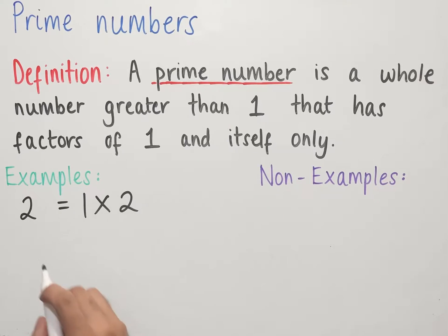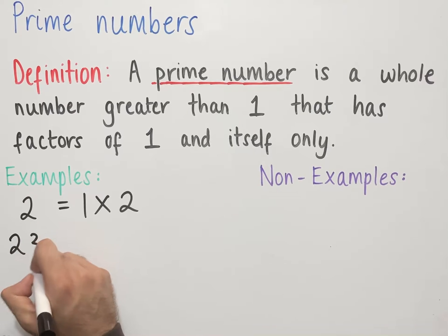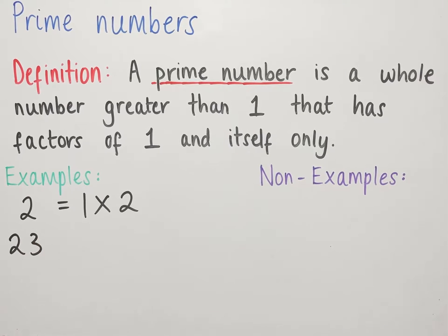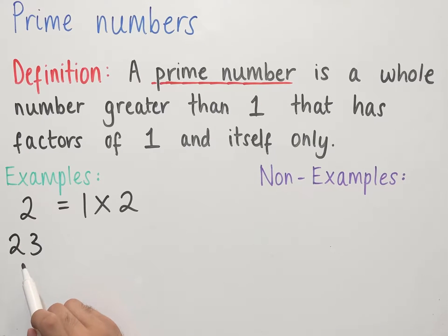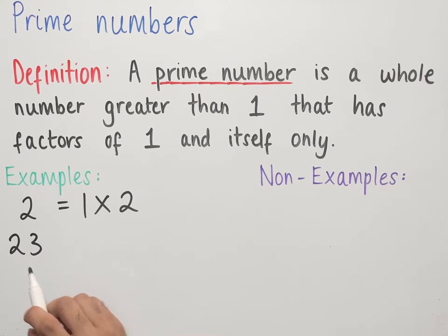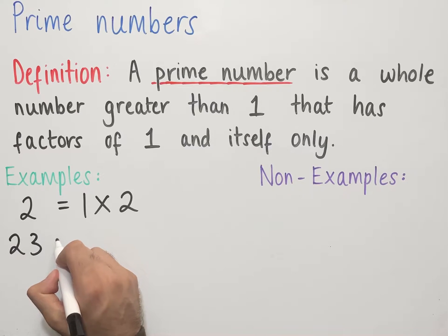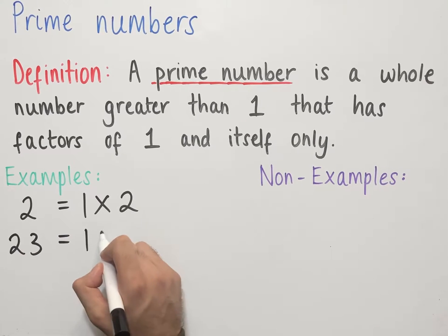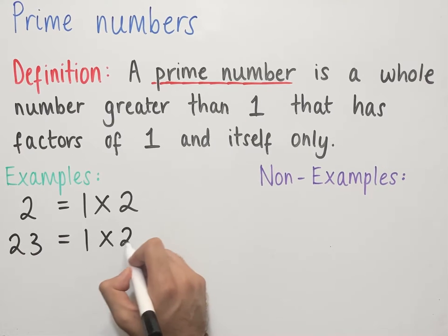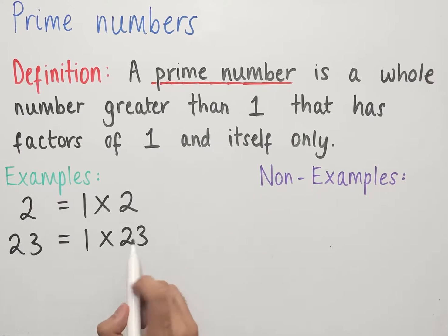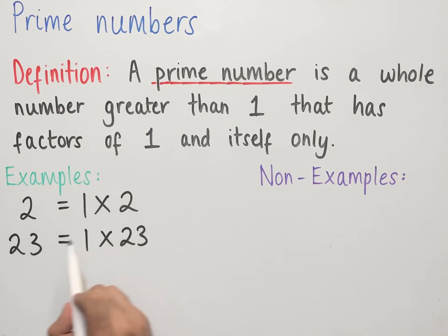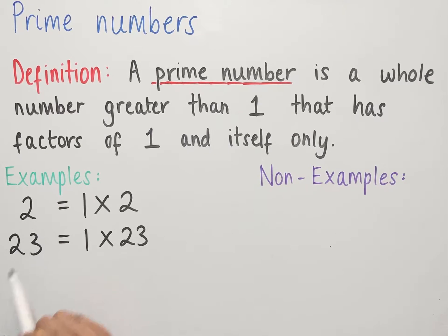Another example: if we look at the number 23, it is also a prime number since it's a whole number, it's greater than 1, and the only factors it has are 1 and 23. So 23 can be written as 1 multiplied by 23.